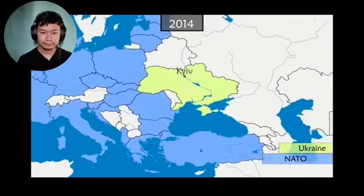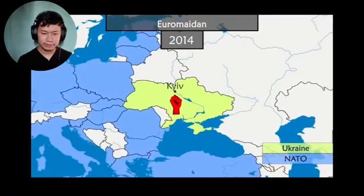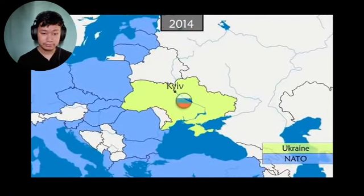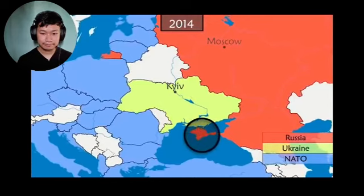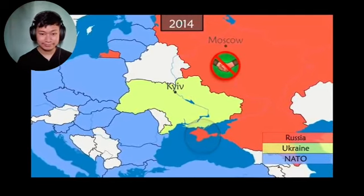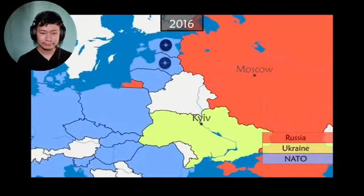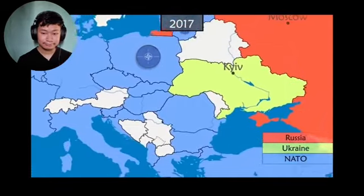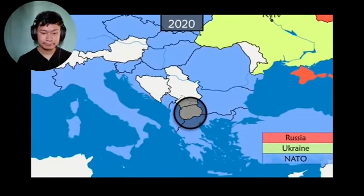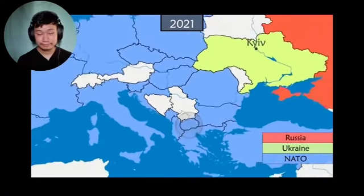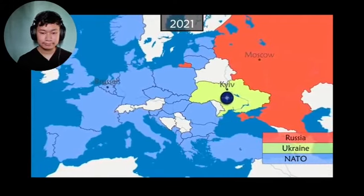In 2014 in Ukraine, pro-European demonstrations turn into a revolution. The pro-Russian government falls, and the country is torn between pro-Russian and pro-European supporters. Russia takes advantage of the chaos to annex Crimea. In response, NATO suspends all cooperation with Russia. In addition, NATO deploys troops in Estonia, Latvia, Lithuania, and Poland. In 2017, Montenegro joins the alliance, and in 2020, North Macedonia becomes the 30th member of NATO. The following year in Brussels, NATO members reiterate their desire to integrate Ukraine into the alliance.